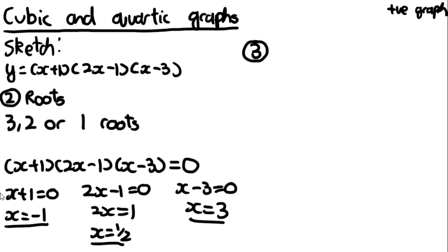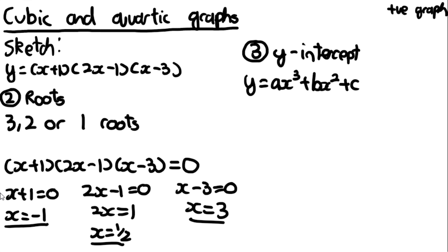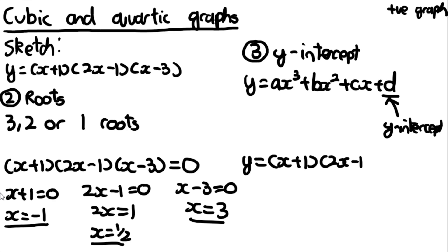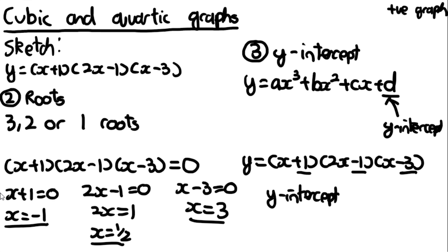The third thing is the y-intercept. If the cubic is in factored form, you simply multiply all the constant terms together — this gives the value of d as if you had expanded everything. For y = (x + 1)(2x − 1)(x − 3), multiplying 1 × (−1) × (−3) gives a y-intercept of 3.